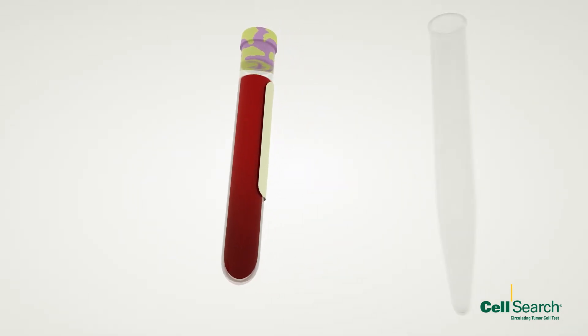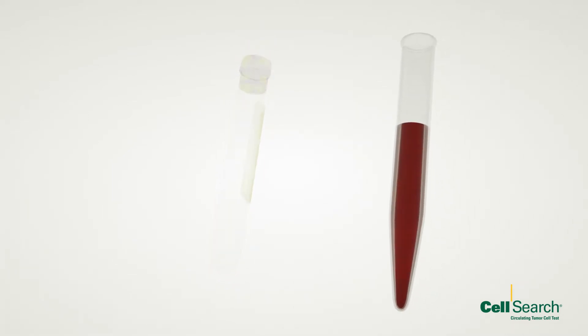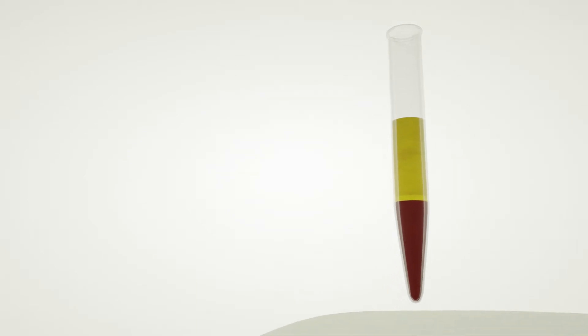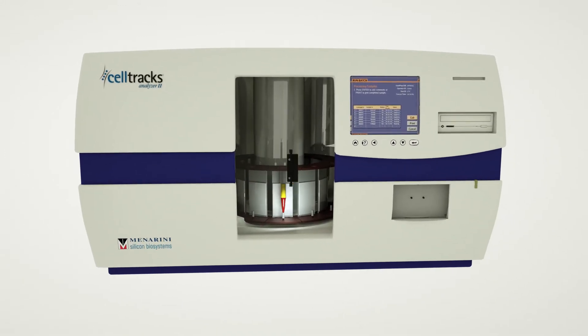7.5 milliliters of blood is transferred into a conical tube and centrifuged to separate packed cells from plasma. The sample is then placed on the CellTracks AutoPrep system, which fully automates the remaining sample preparation steps.